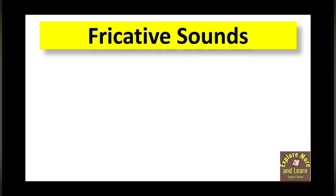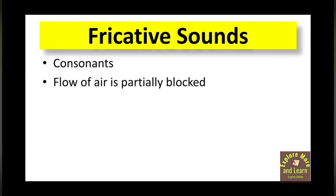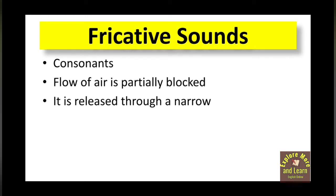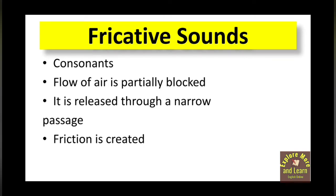In this part I am talking about manner of articulation for fricative sounds — what they are and how to pronounce them. Fricative sounds are obviously consonants because air is obstructed and released when we pronounce consonant sounds. When we pronounce fricative sounds, the flow of air is partially blocked — not completely blocked, partially blocked — and air is released through a narrow passage.